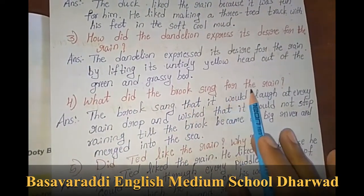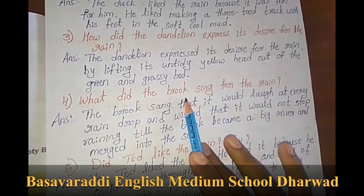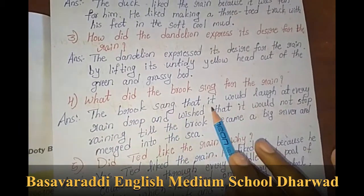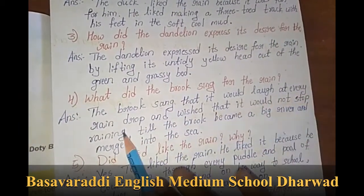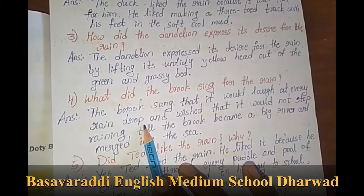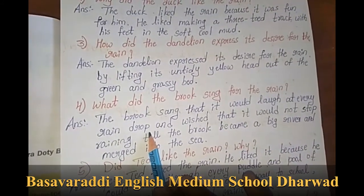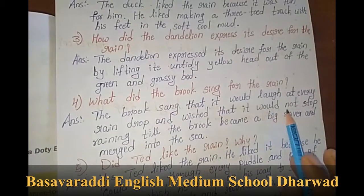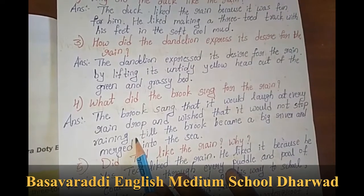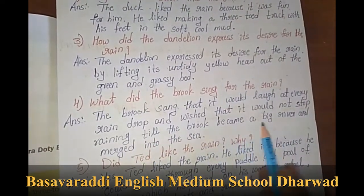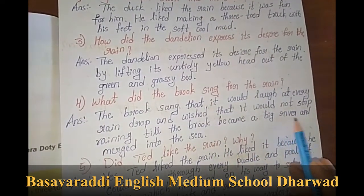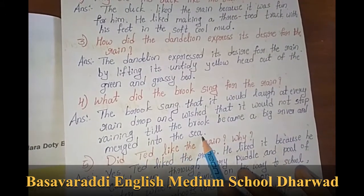Fourth question: what did the brook sing for the rain? The brook sang that it would laugh at every raindrop and wished that it would not stop raining — till the brook became a big river and merged into the sea.